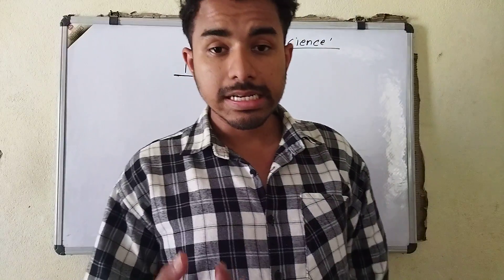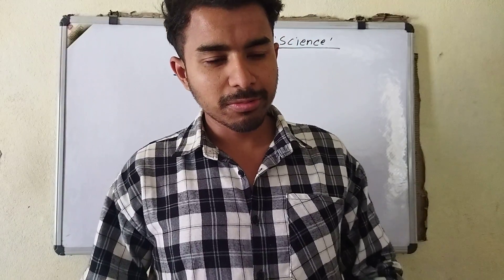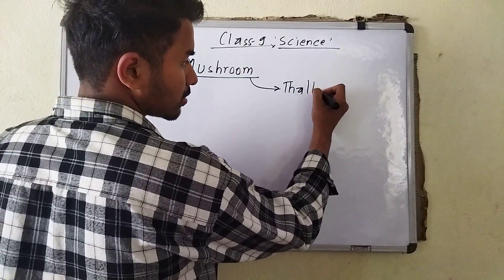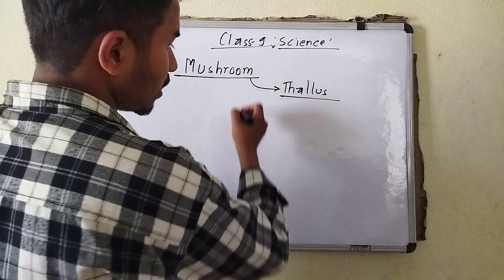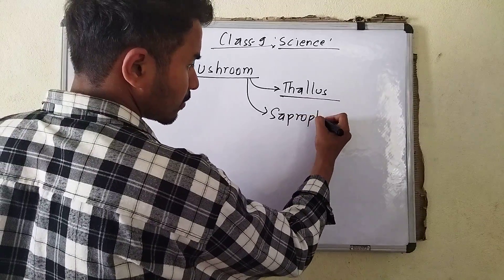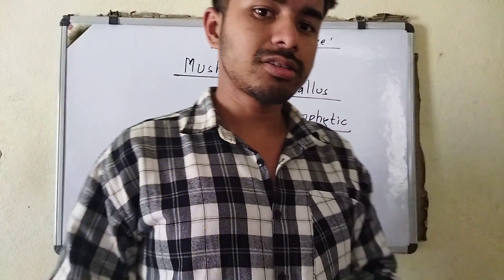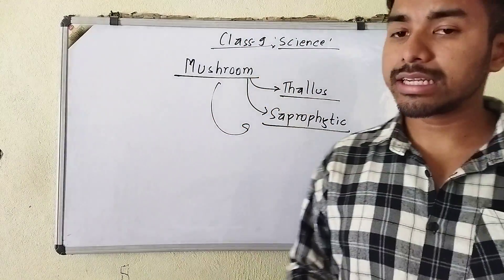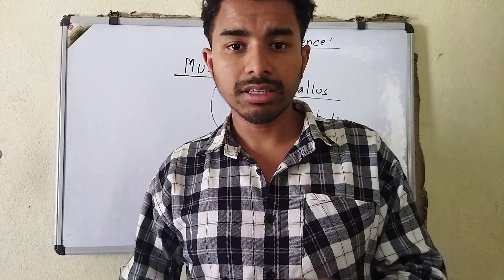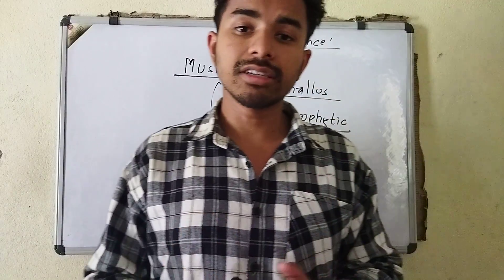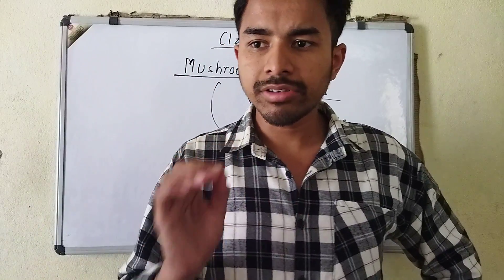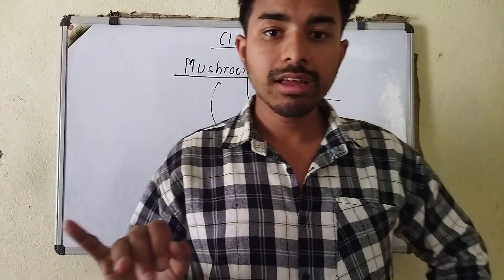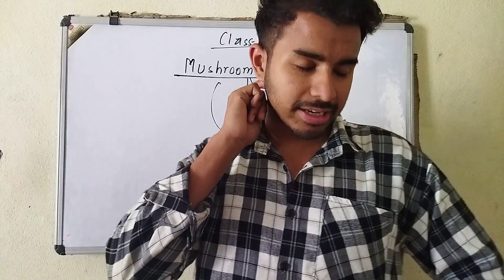Mushroom has a saprophytic mode of nutrition. Saprophytes depend on dead and decayed materials. If you look for saprophytes, you will find them in moist and damp places, moist and shady places. So mushroom is a non-green thallophyte that is mostly found in moist and damp places.